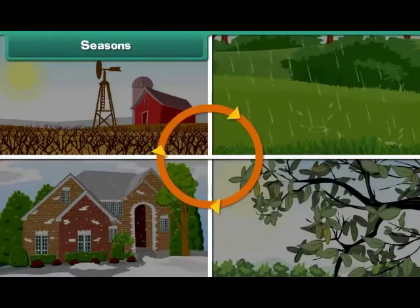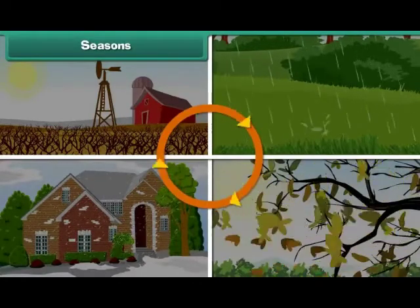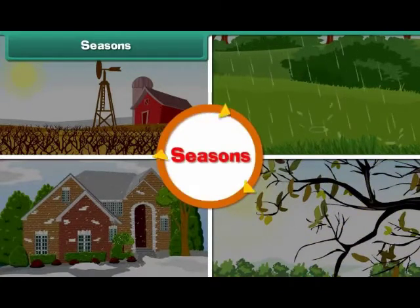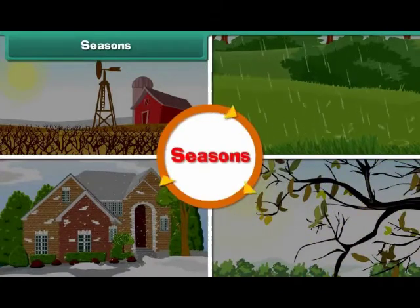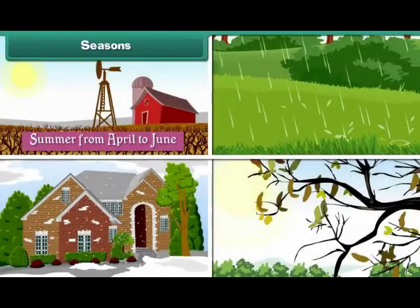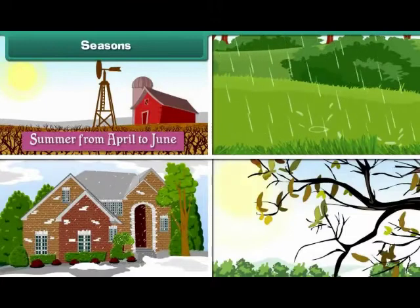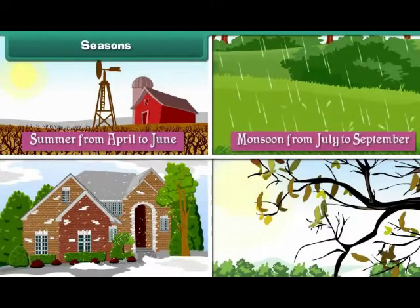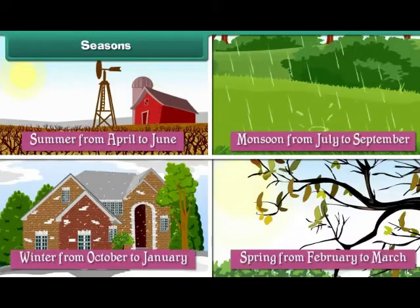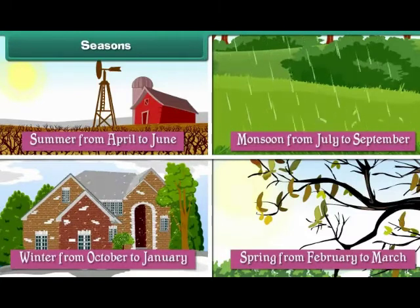The weather changes in cycles and these cycles are called seasons. There are four main seasons in a year. They are summer from April to June, monsoon from July to September, winter from October to January, and spring from February to March.